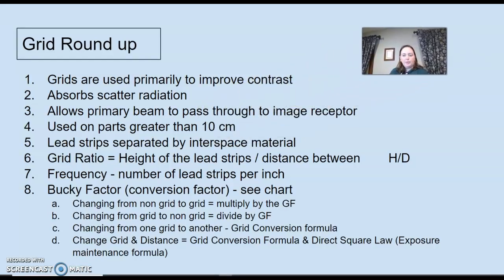Alright, so just a grid roundup, just some notes. What's the primary purpose of grids? To improve contrast. They absorb the scatter radiation so it doesn't hit your image. It allows the primary beam to pass through to the image receptor, which is what you want. Use on any parts greater than 10 cm. That should be kind of a flashcard for you. Remember, it's created with lead strips that are separated by interspace materials. The definition for grid ratio: height of the lead strips divided by the distance between, or h over d. Frequency of the grid is the number of lead strips it has per inch.